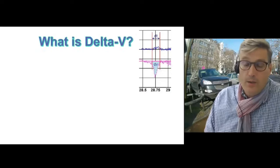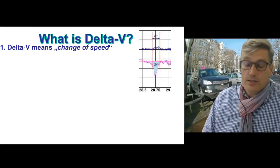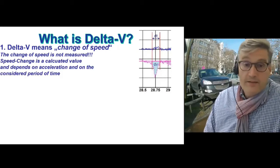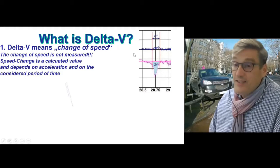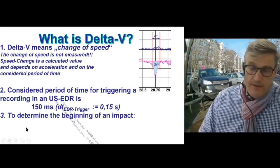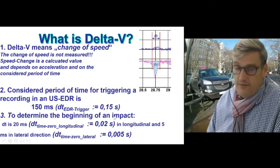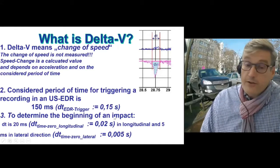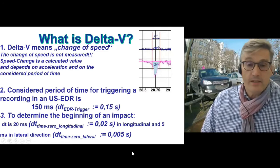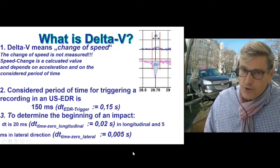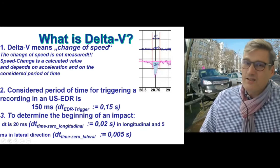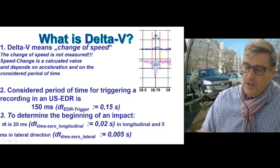So what is delta V, and why is it not usable for vulnerable road users? Delta V means the change of speed during an impact, and this is not really measured directly — it is a calculated value, integrated over a time period of 150 milliseconds. In a crash with a pedestrian, 150 milliseconds is actually a rather long time, because a pedestrian crash consists of more than one impact: there's a crash on the legs, on the hips, on the thorax, and on the head.